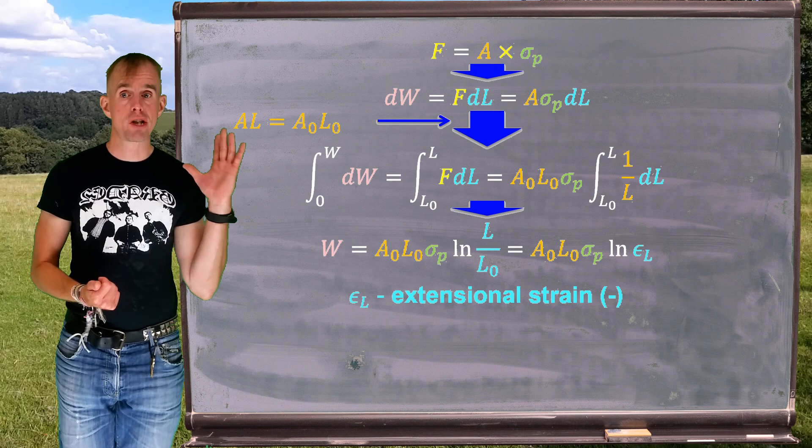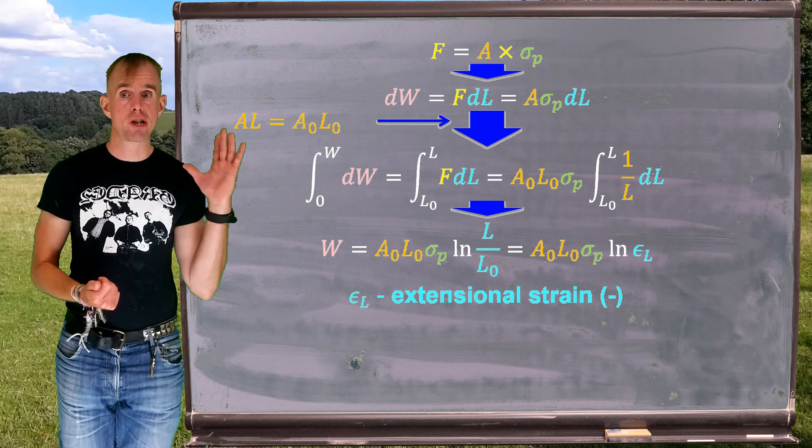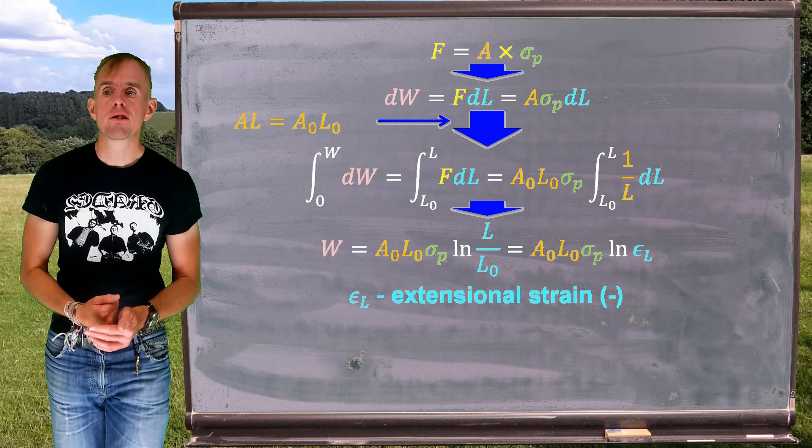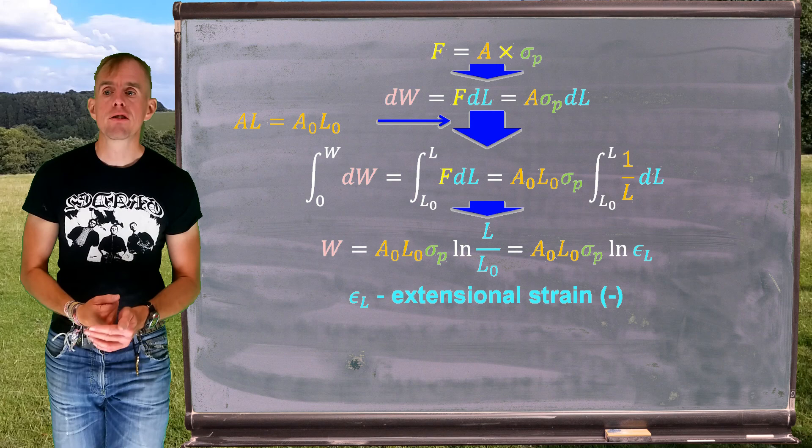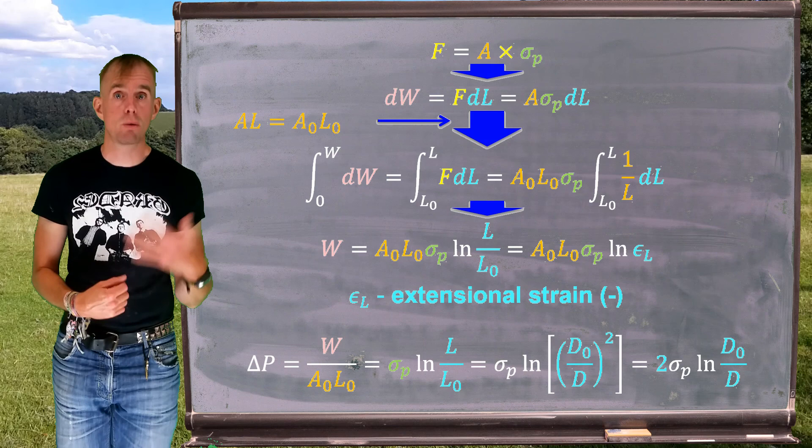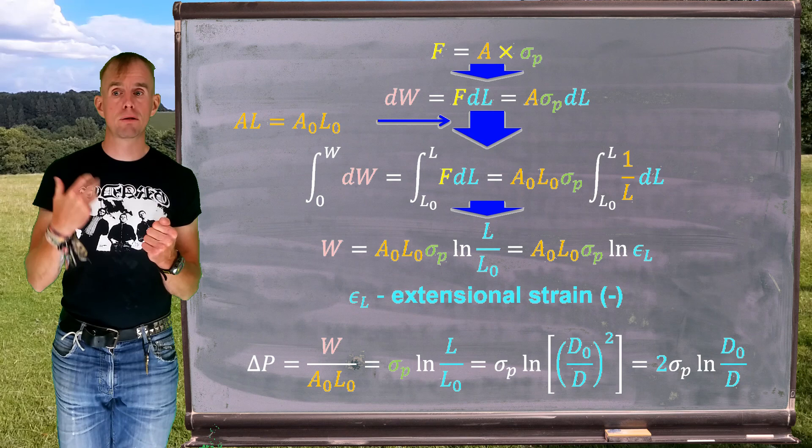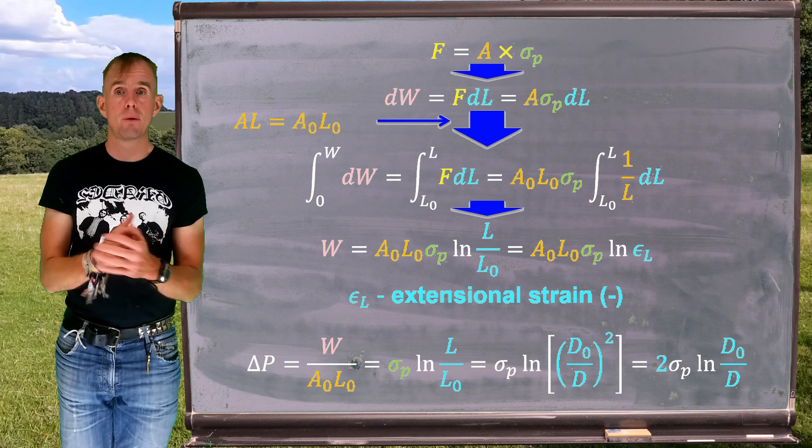Now work necessarily isn't that particularly measurable in a flow, so let's think of work per unit volume or pressure, and so let's divide W by the volume of the material. The volume of the material is simply A0 L0. We know that at the initial condition. So my pressure required to drive this deformation, W over A0 L0, is going to be equal to sigma p, the A0 and the L0 cancel out very nicely, log L over L0.